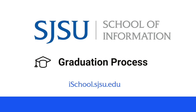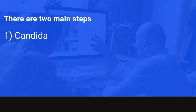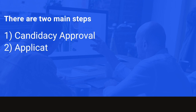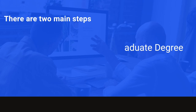This is an overview of the graduation process at SJSU iSchool. From the hamburger menu, navigate to Student Resources and choose Graduation. There are two main steps: candidacy approval and application for award of graduate degree.